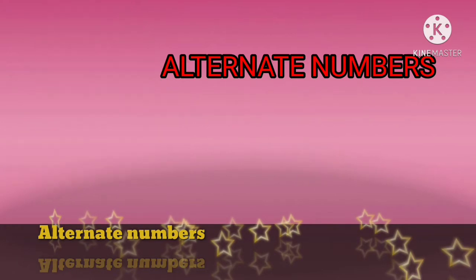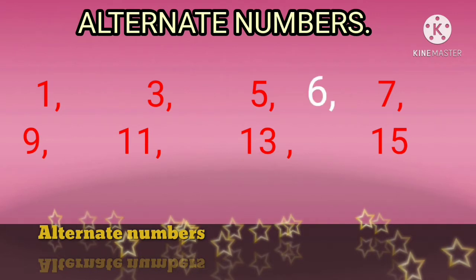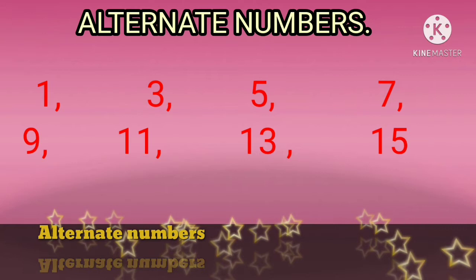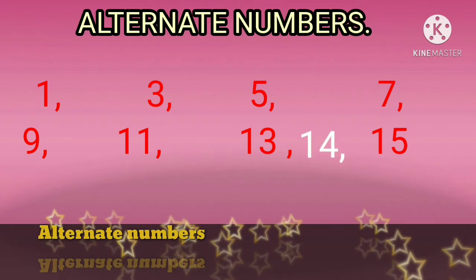Now see, here 1 is the alternate number but 2 skip. 3 alternate number, 4 skip. 5 alternate number, 6 skip. 7 alternate number, 8 skip. Then 9 alternate number, 10 skip. 11 alternate number, 12 skip. Then 13 alternate number, 14 skip, and last 15 alternate number.